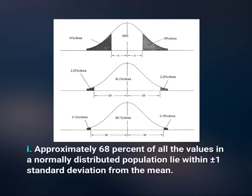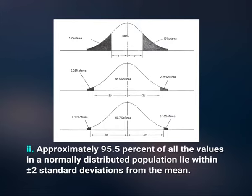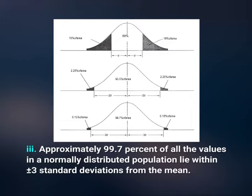Mathematically, it is true that: Number 1 — approximately 68% of all the values in a normally distributed population lie within plus or minus 1 standard deviation from the mean. Number 2 — approximately 95.5% of all the values lie within plus or minus 2 standard deviations from the mean. Number 3 — approximately 99.7% of all the values lie within plus or minus 3 standard deviations from the mean. These three statements are shown graphically in the figure.